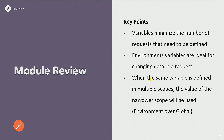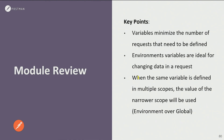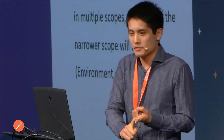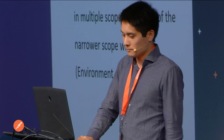Quick review: variables minimize the number of requests that need to be defined, and environments are one of the possible places where we can define values for those variables — they're ideal for changing data within a request. Very importantly, when the same variable is defined in multiple scopes — say in an environment and globally — the value of the narrower scope takes precedence. So environment takes precedence over collection and global.